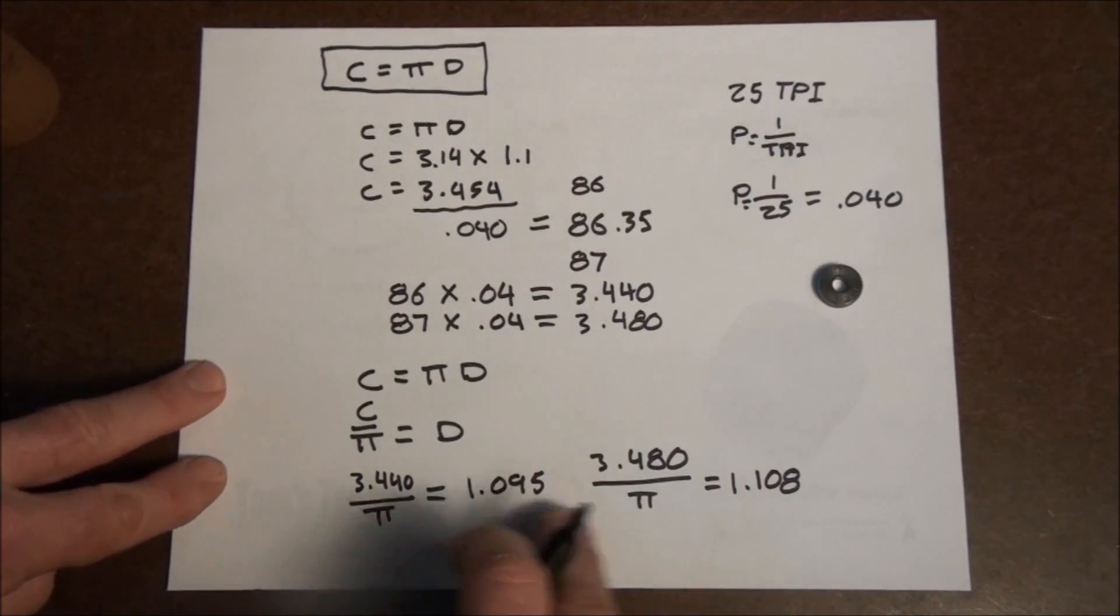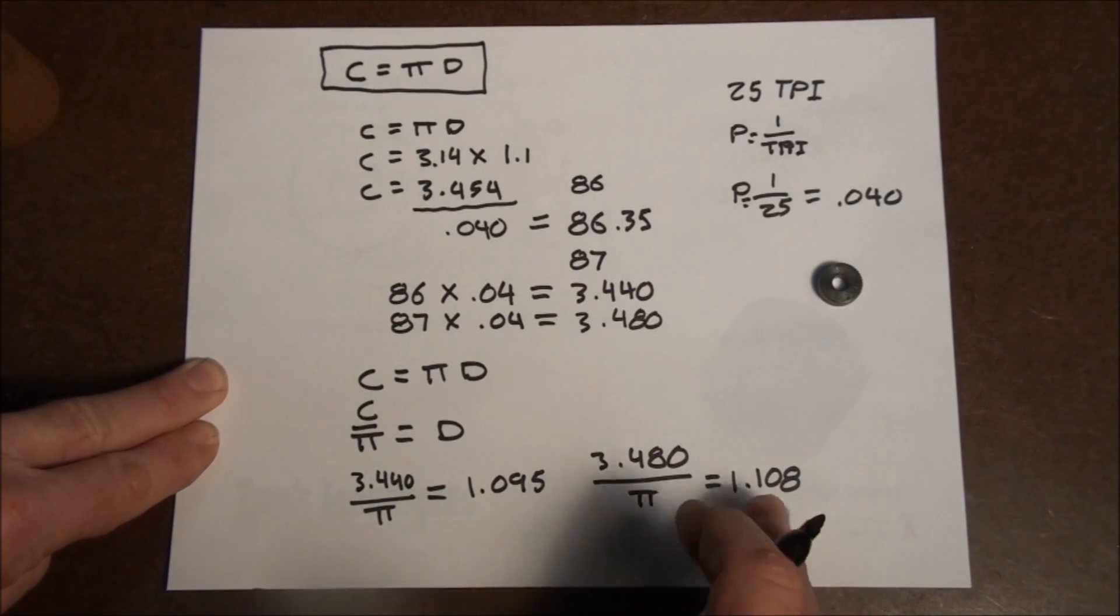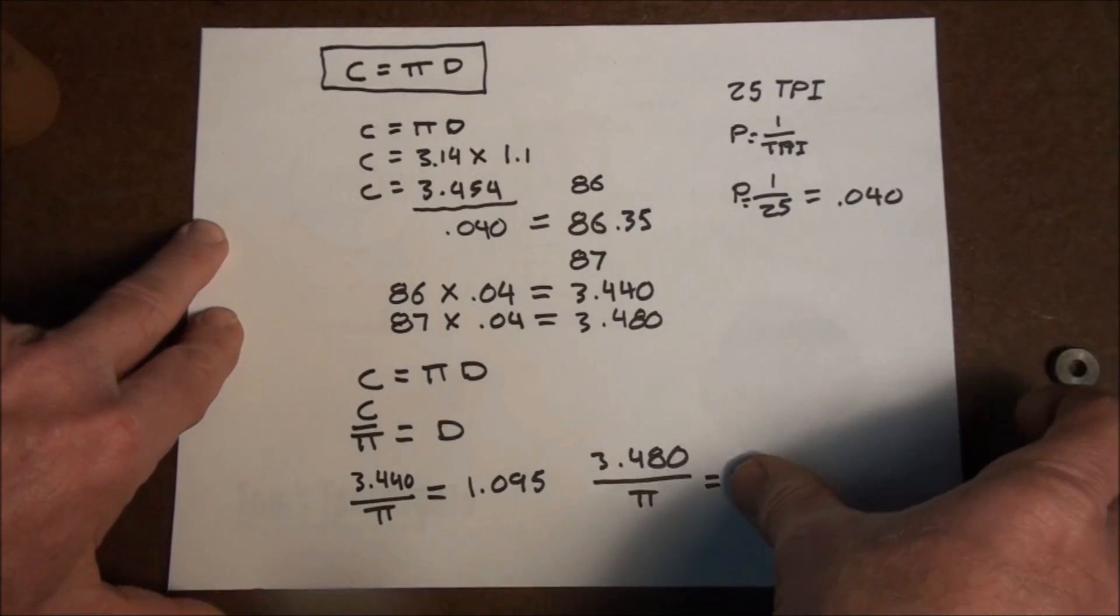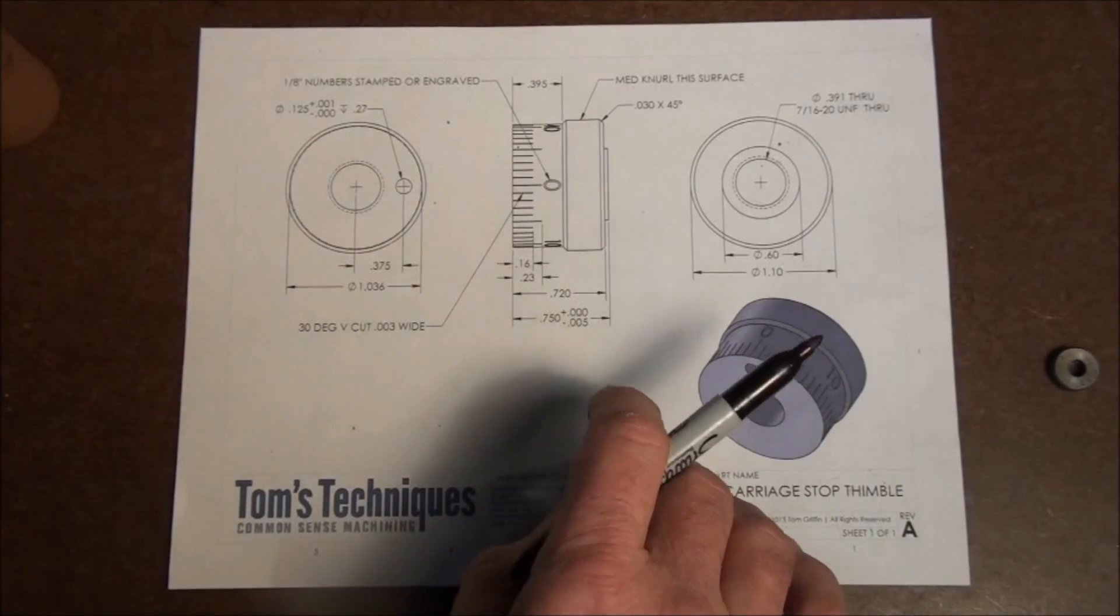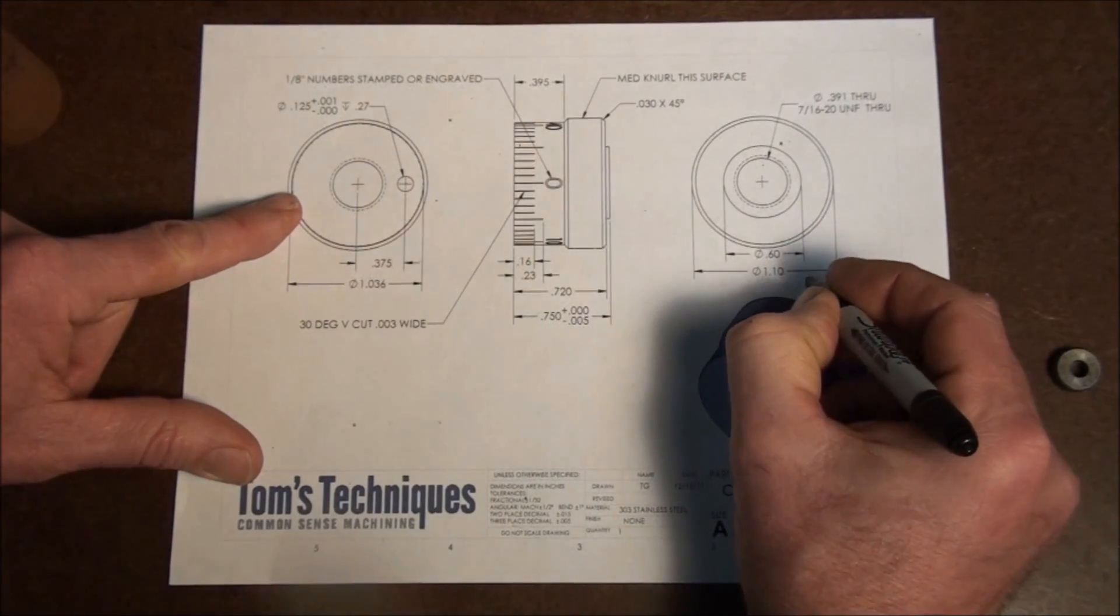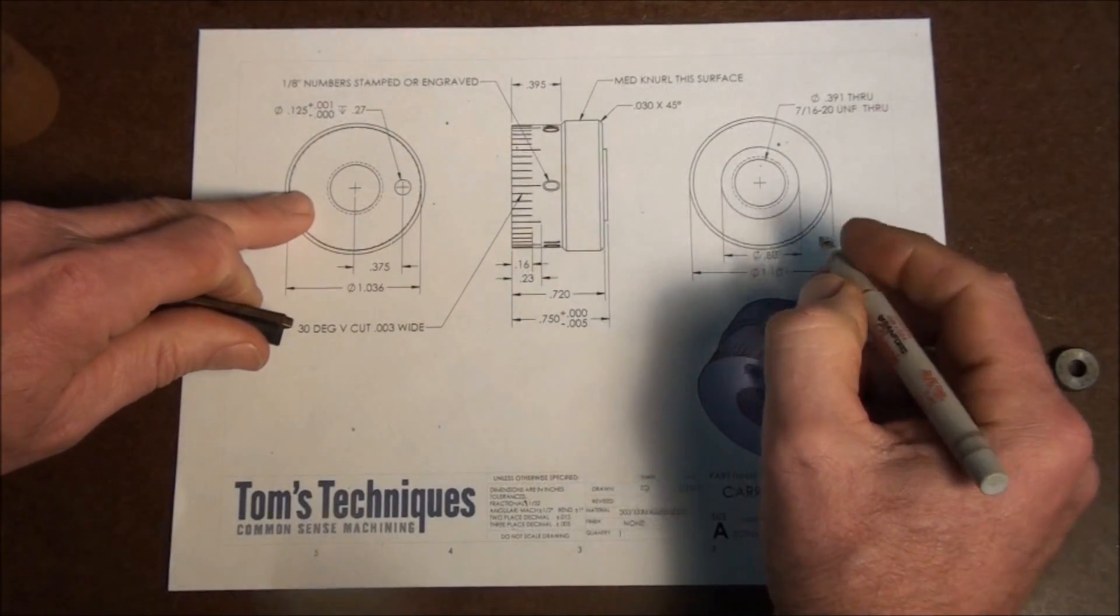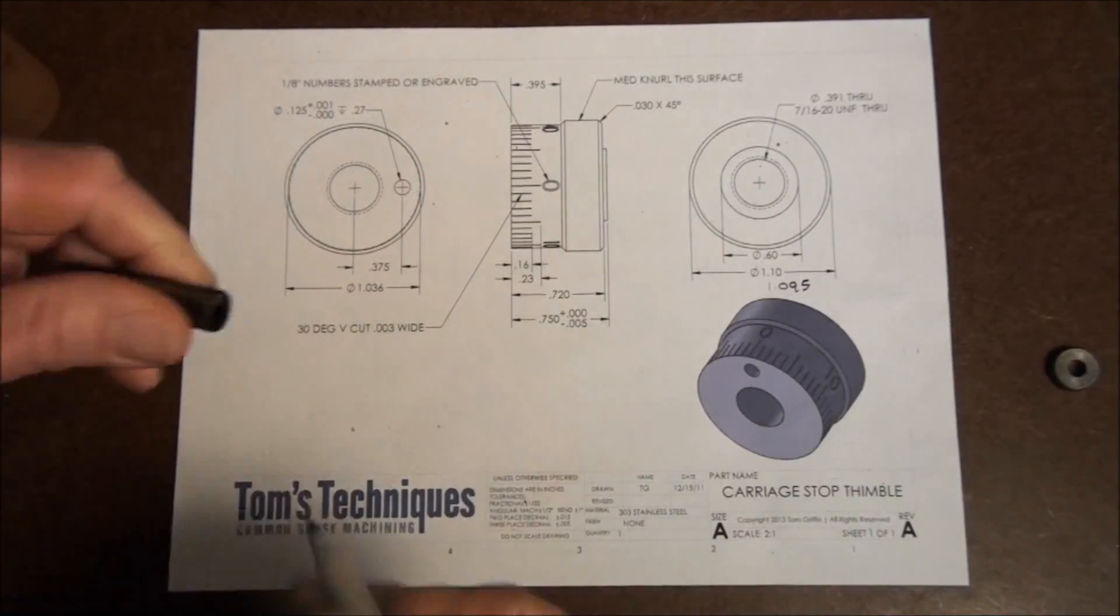So these are the diameters we want to make that area that gets knurled. Either one of these. It doesn't matter. You see, it was drawn 1.1 inches. That's like somewhere in between these two. So we'll choose one of these. It doesn't matter which one. Either one will work just fine. Let's pick this 1.095. It's a little closer to 1.1 than 1.108. So instead of 1.1, we want 1.095. That'll be our new diameter.